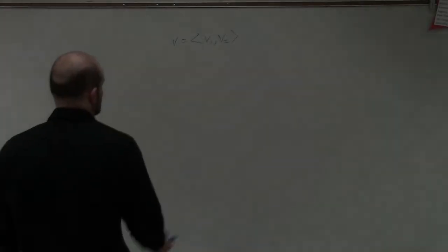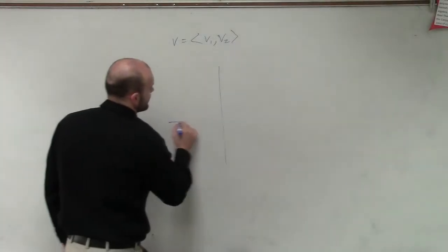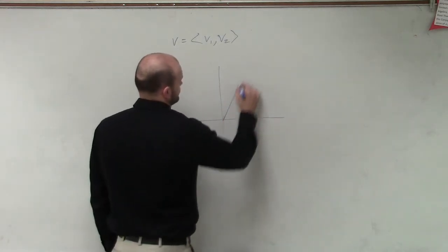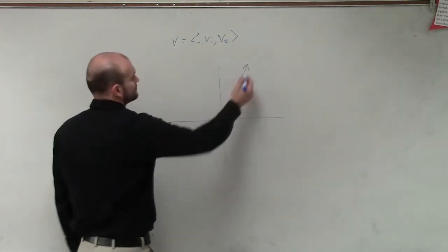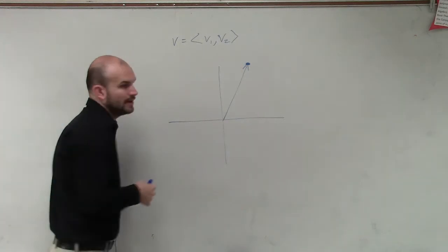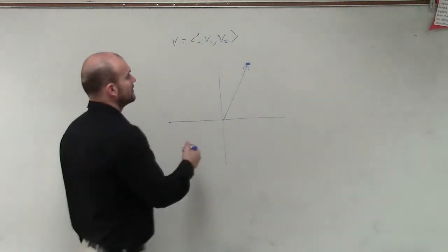V1 and V2, right? So it's going to be our component form. It looks something like that, right? That has the coordinates V1 and V2.